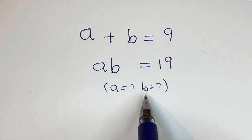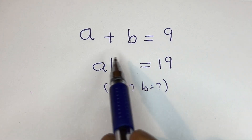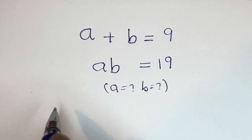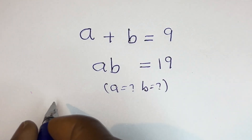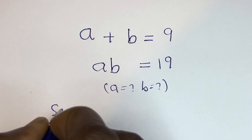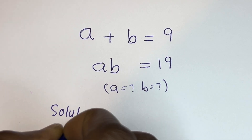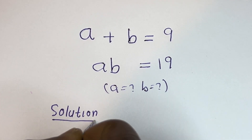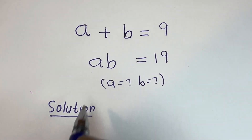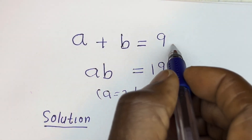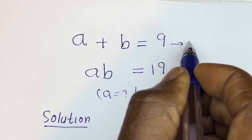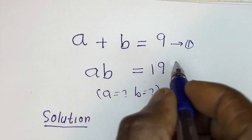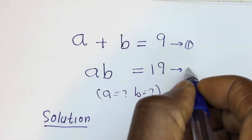Hello. How to solve for a and b in this equation: a plus b is equal to 9, and ab is equal to 19.